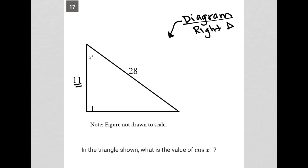We know this side is 11 here, we know the hypotenuse is 28. Looks like we have an x degrees in that angle there. The question says in the triangle shown what is the value of cosine x? All right, so we have cos x.